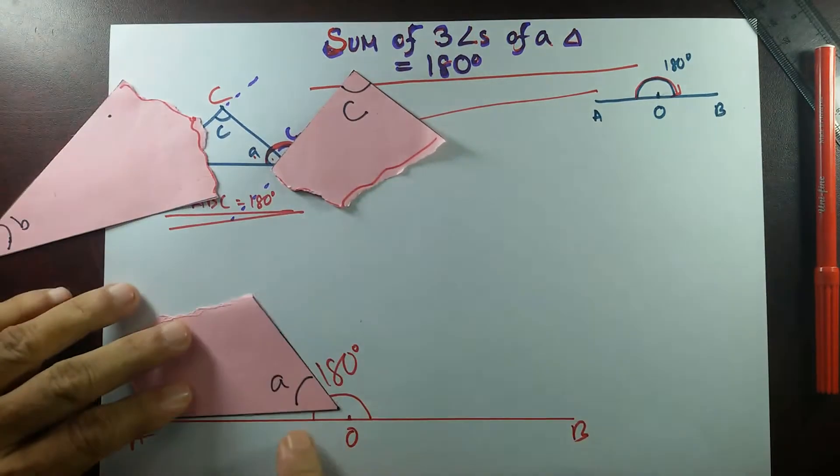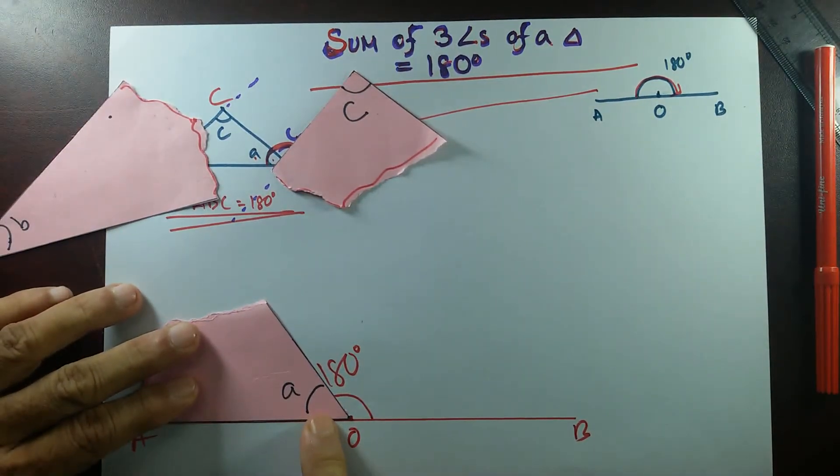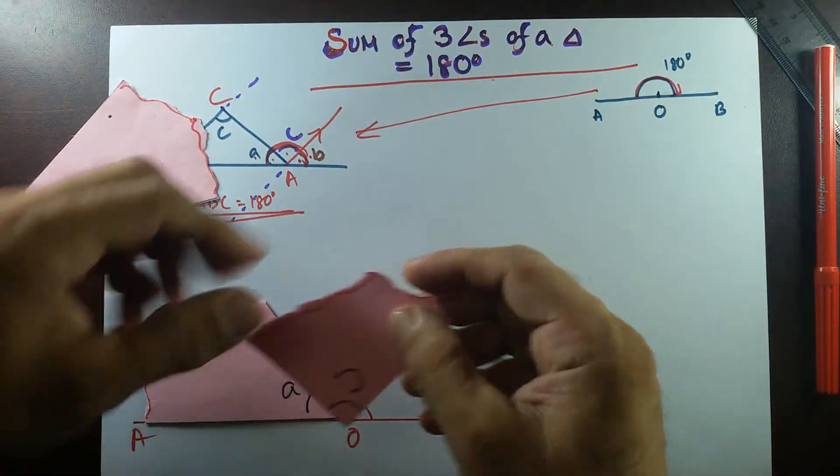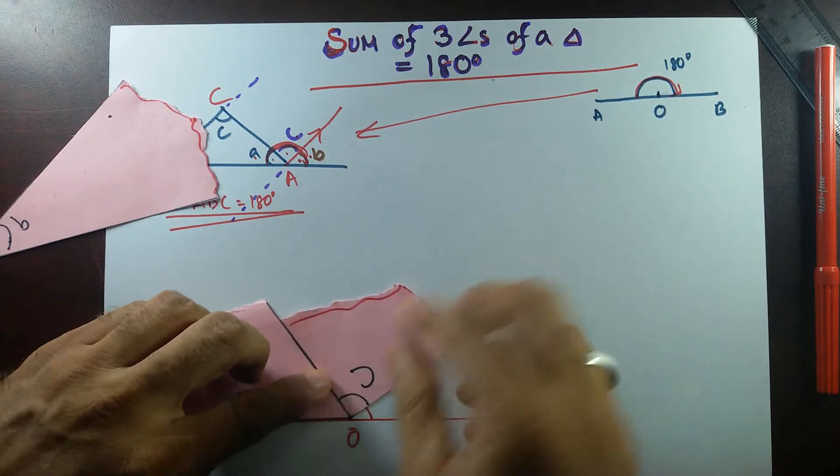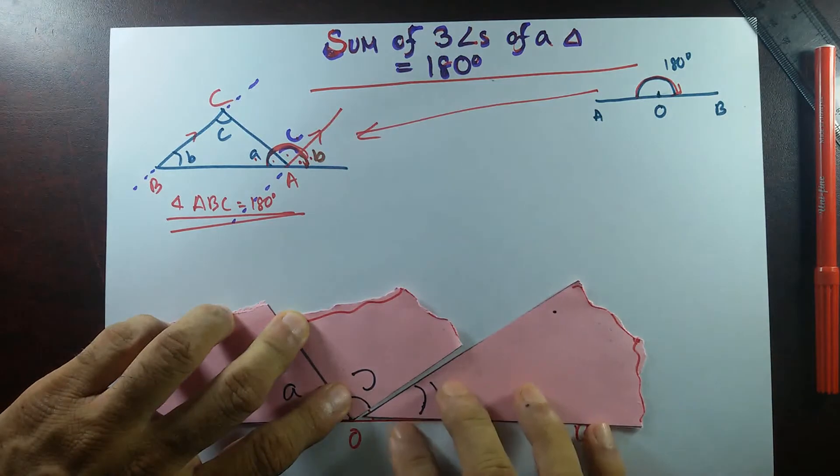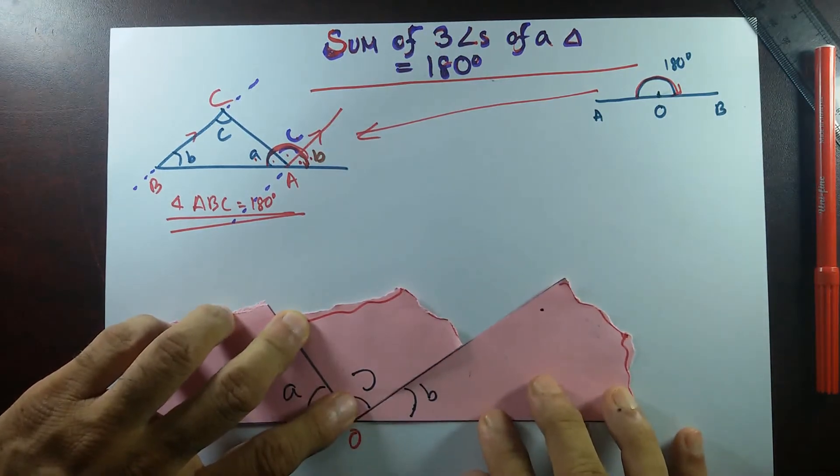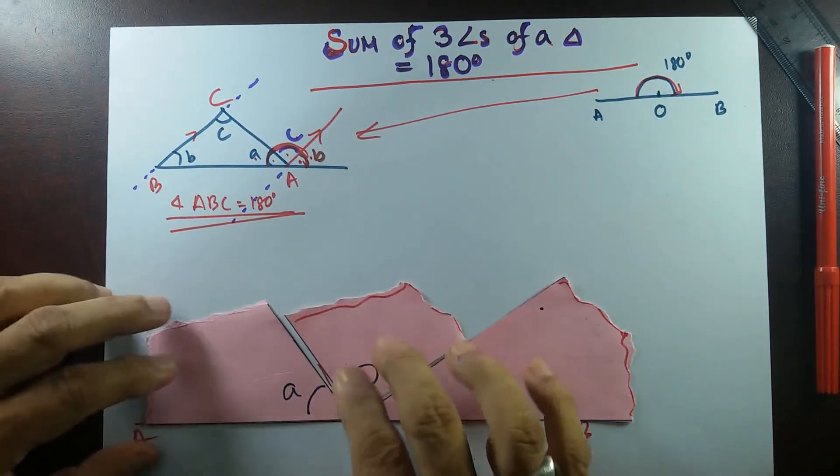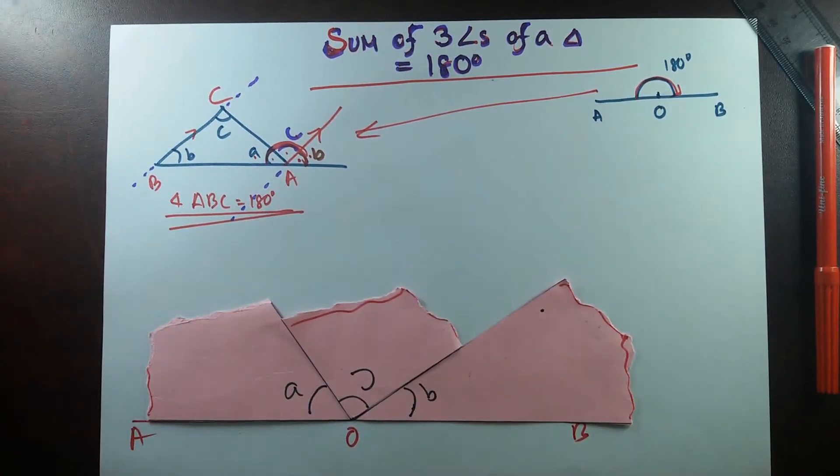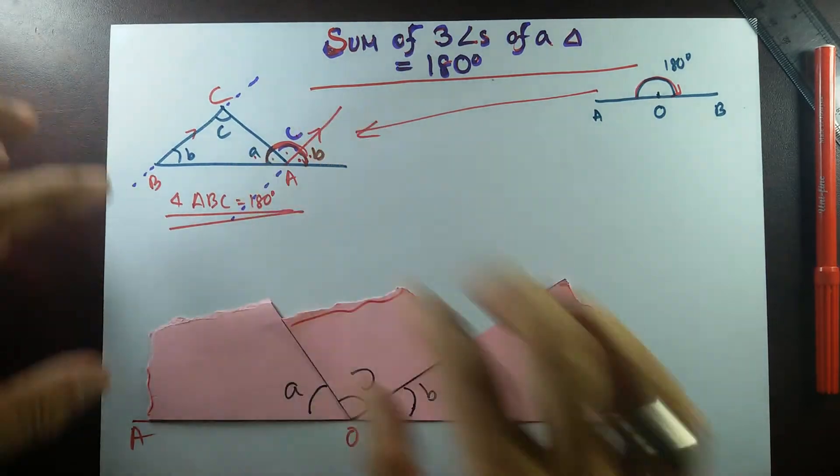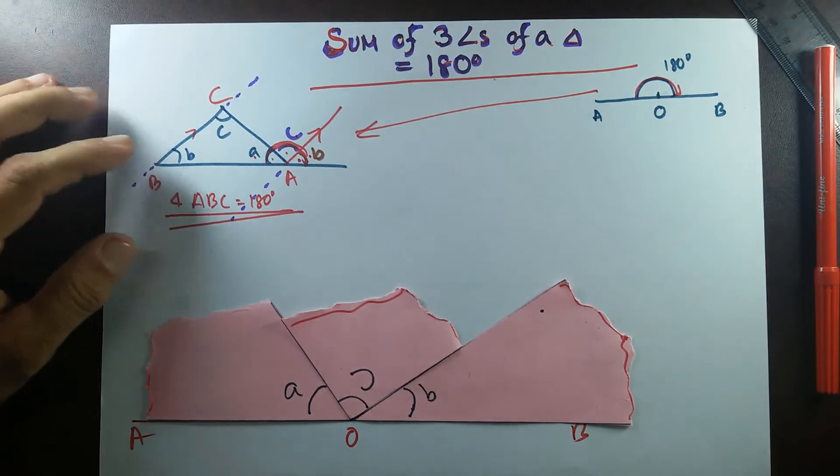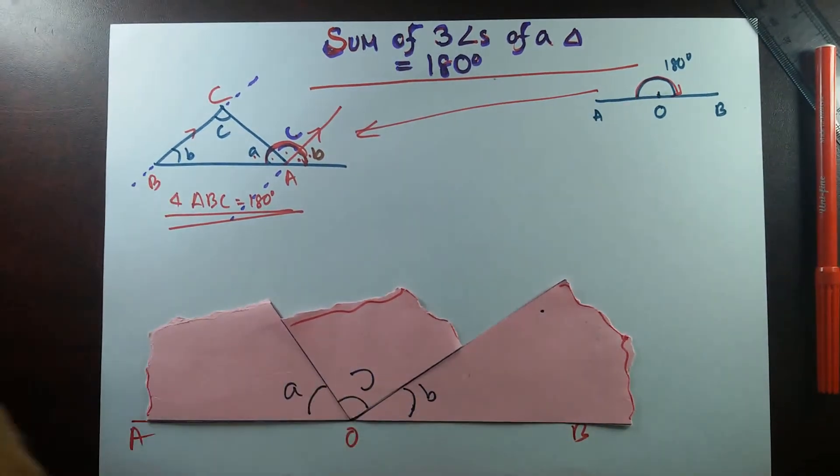Now what I'm going to do is I'm going to put A over here. See that, A right over here. And then C, I'll put that straight side here. So it's like this. And then this B over here. See that? The sum of these three angles becomes 180 degrees. So by showing you this, I can prove that sum of three angles of a triangle equal to 180 degrees.